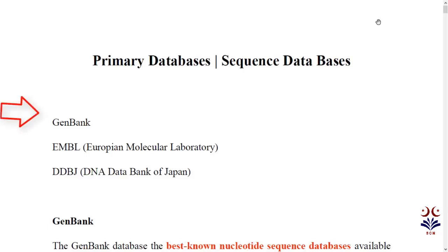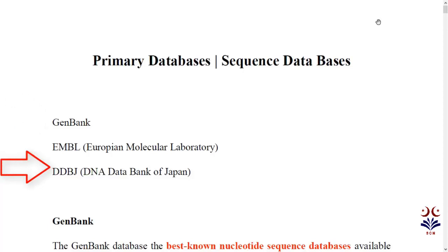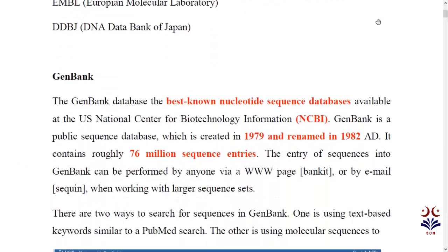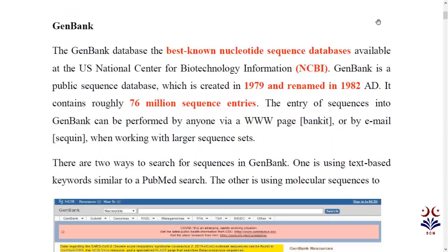Today we start with GenBank, EMBL, and DDBJ. We will see the interface, characteristics, and the file format. We have biological databases — within these there are primary databases, secondary databases, and specialized databases. Today we focus on primary databases.